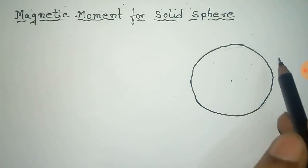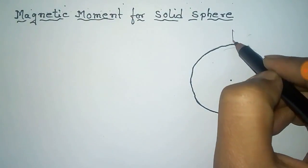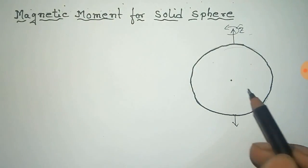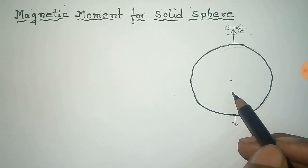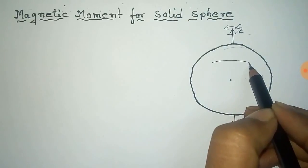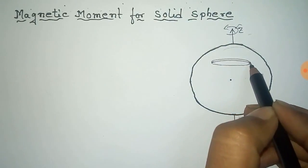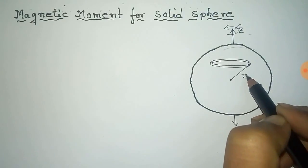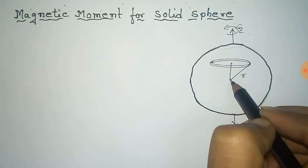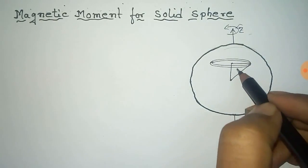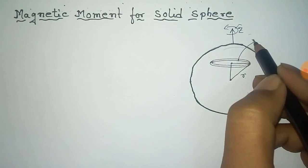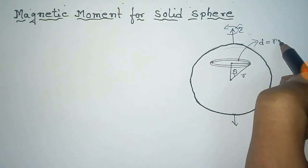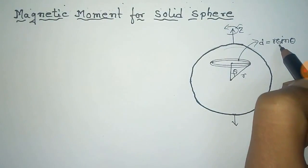We have to find the magnetic moment at the center of this solid sphere. The sphere is rotating along the z-axis and the magnetic moment is to be found at the center. For this, we consider an elementary ring. This is the ring, this distance is small, and this is the center of the ring. The radius of the ring is D, and if this angle is theta, then this radius can be written as r sine theta.